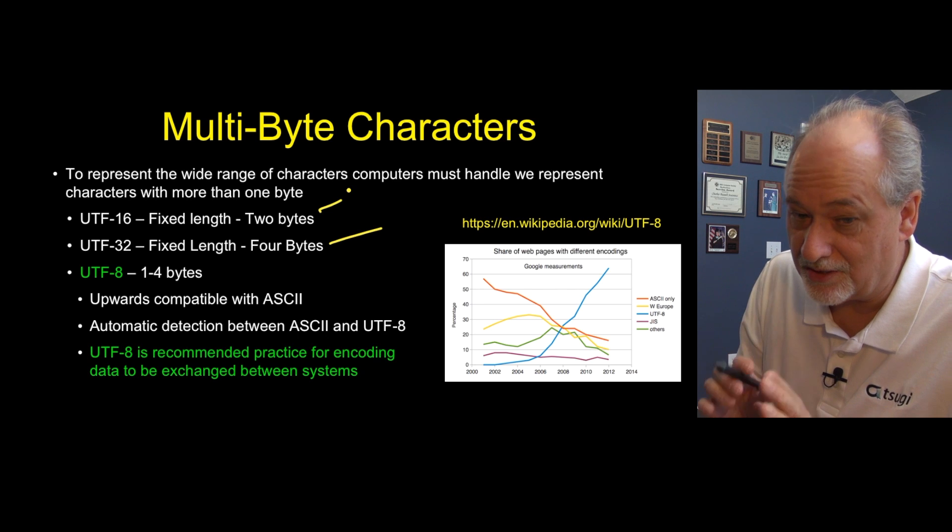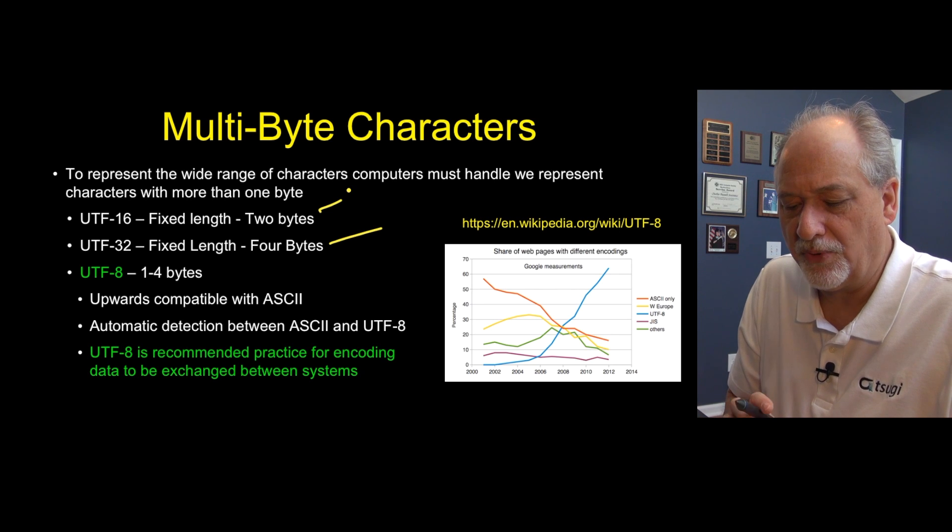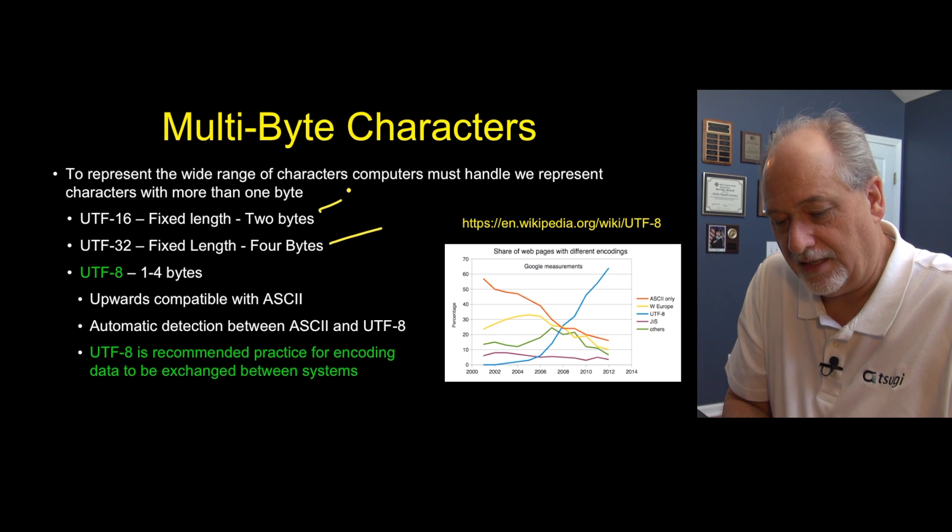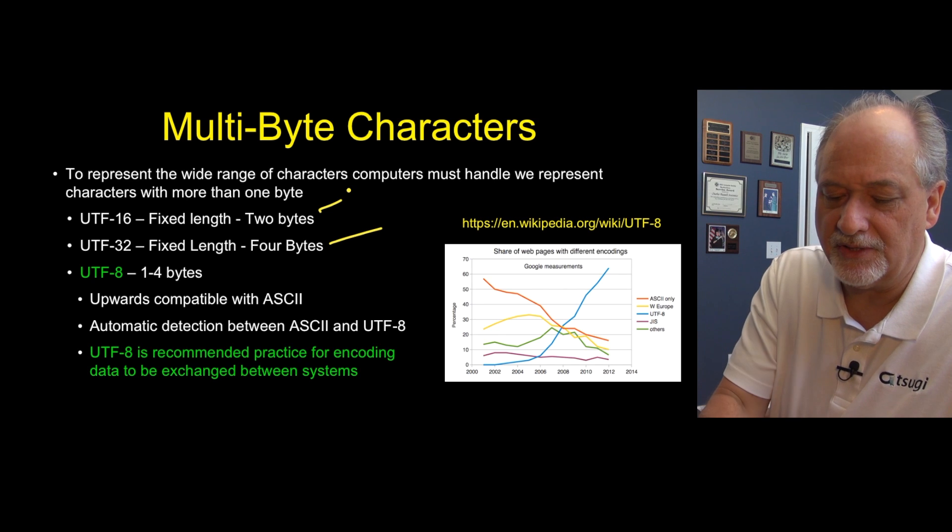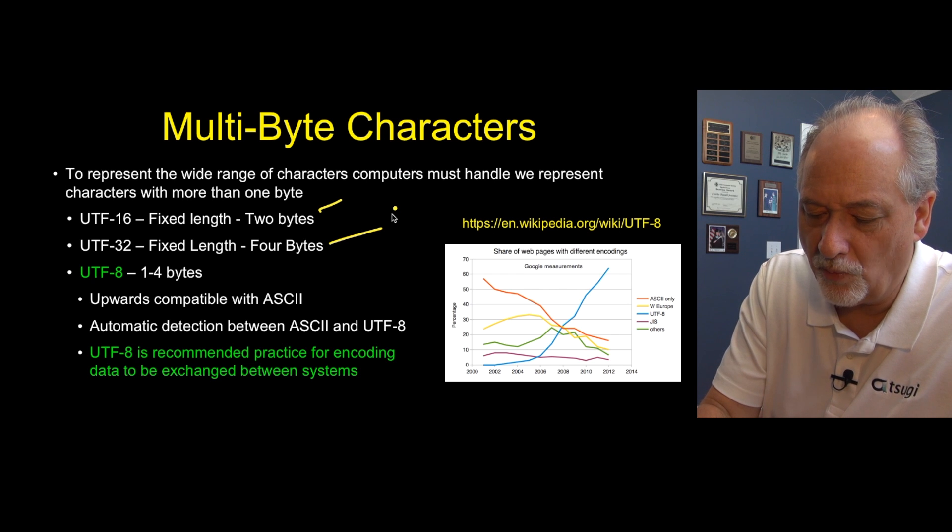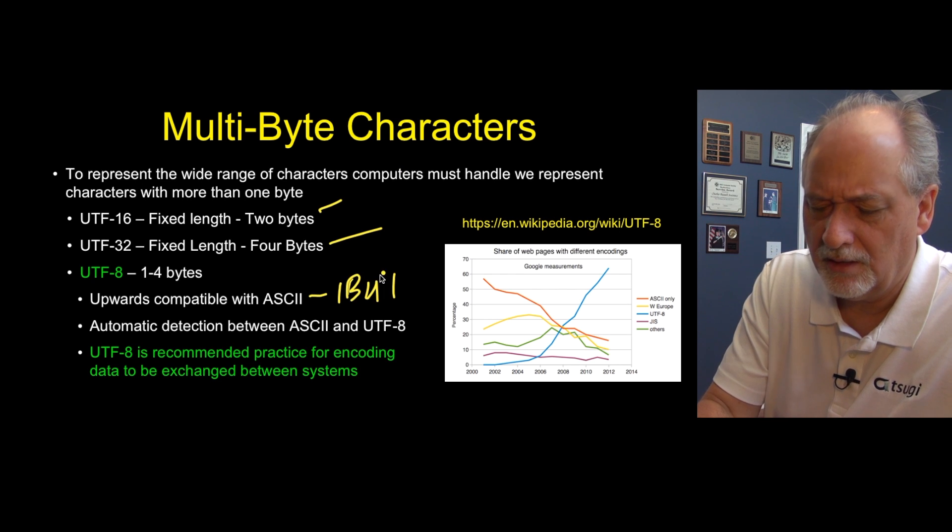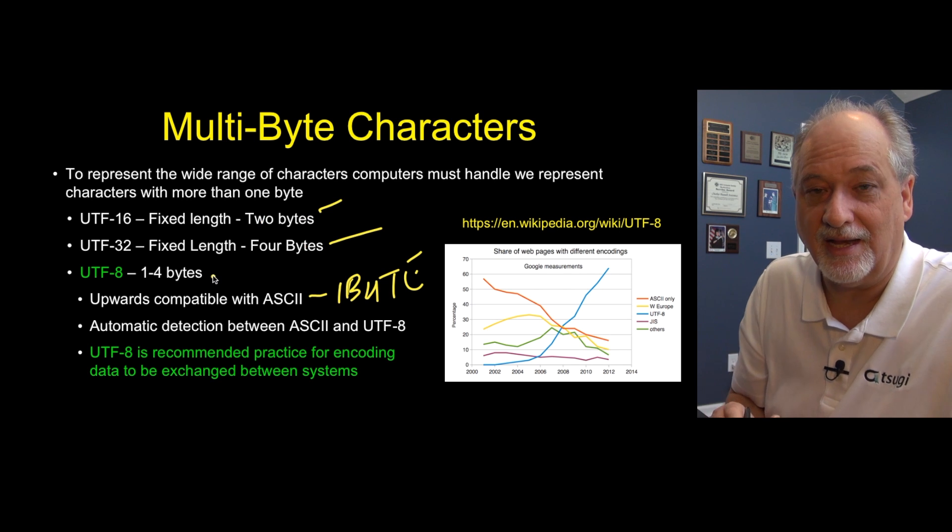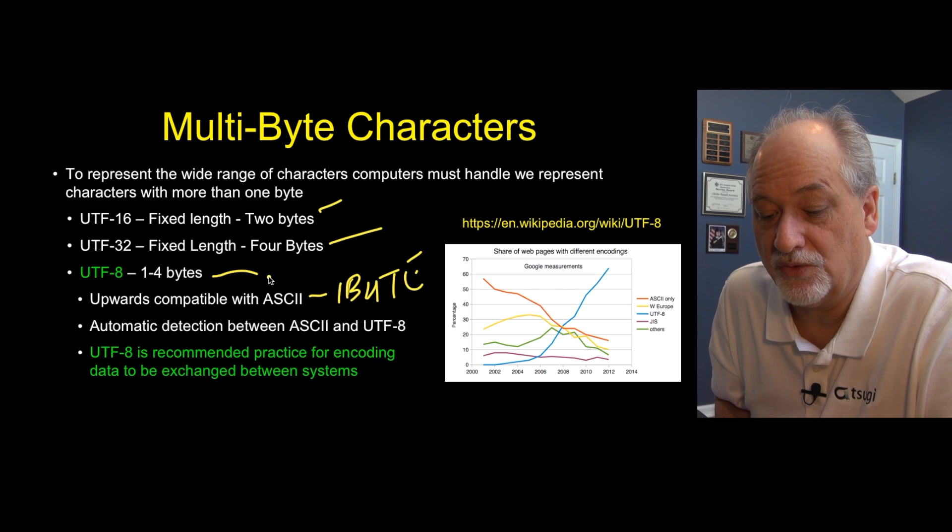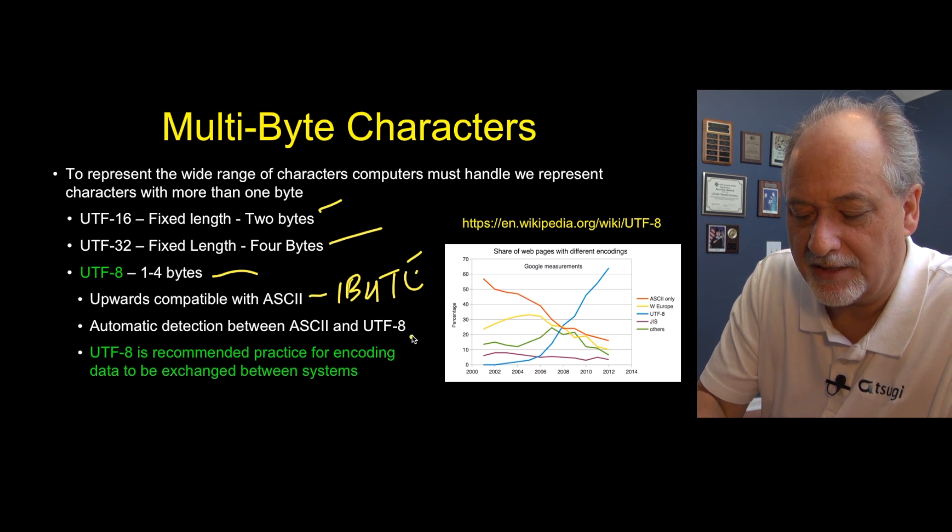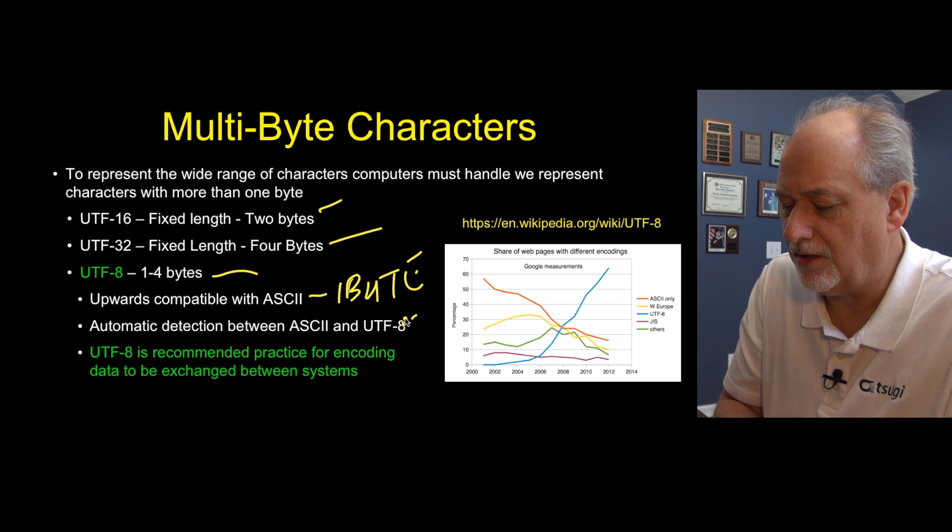It's used in some countries. But the best practice for moving data across the internet or in a file that you're going to move between computers is what's called UTF-8. And so what happens is that UTF-32 is fixed length. ASCII is one byte, UTF-16 is two bytes, UTF-32 is four bytes. And UTF-8 has dynamic length, meaning that it is one to four bytes. And if it's only one byte long, it's perfectly compatible with ASCII, meaning that an ASCII file is also a UTF-8.